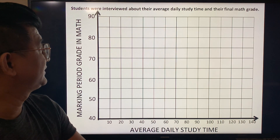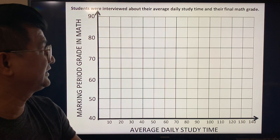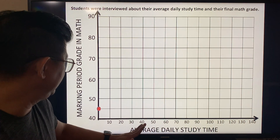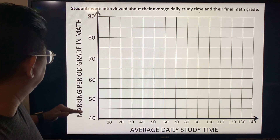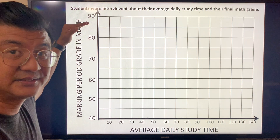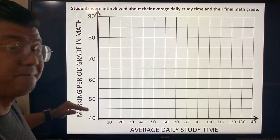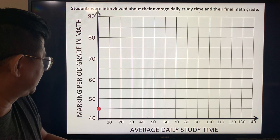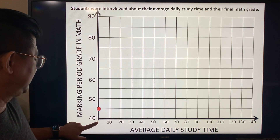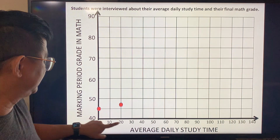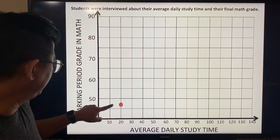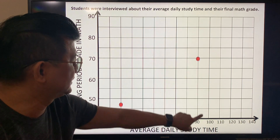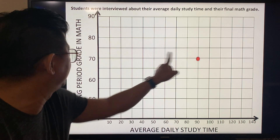Students were interviewed about their average daily study time and their final math grade. Daily study time is on the x-axis and the marking period grade is on the y-axis — the dependent and independent variables. One student said they don't study and their grade is 45. Another studied for 20 minutes with a grade of 48, and another studied for 90 minutes with a grade of 70.